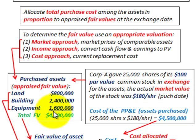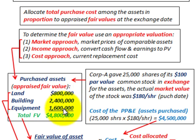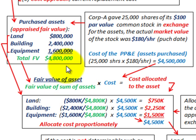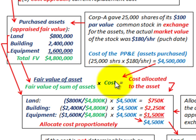We have the appraised fair value at $4,800,000 and the cost at $4,500,000. We have to allocate this cost among the assets we bought using this general equation: take the fair value of the individual asset and divide it by the fair value of the sum of all the assets. I have it color coded here for quick reference. Then take that fractional amount times the cost — that $4,500,000 — that has to be allocated.